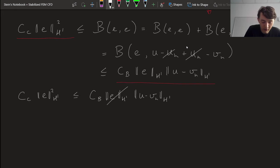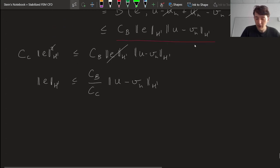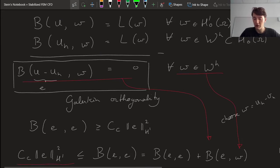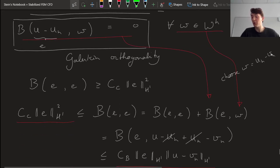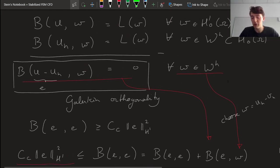So let me write that out. So we have c_c times the norm of the error squared. It's going to be smaller than c_b times the norm of the error times the norm of u - v_h. I can sort of play the same trick. I cancel this e with the square. I divide both sides by the coercivity constant. And I get that the error, the magnitude of the error in the H^1 sense is going to be smaller than c_b over c_c times the norm of this interesting quantity here, u - v_h. And again, this has to be true for all choices v_h in our discrete space.